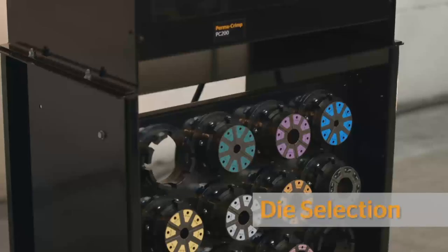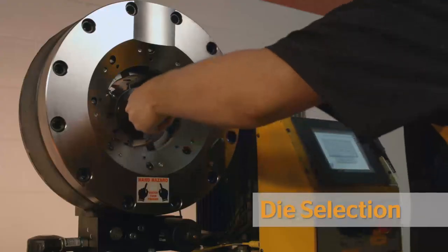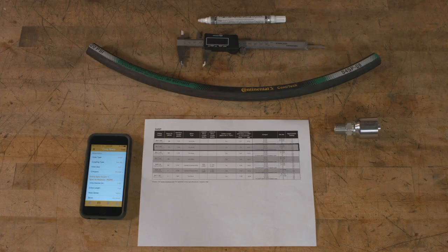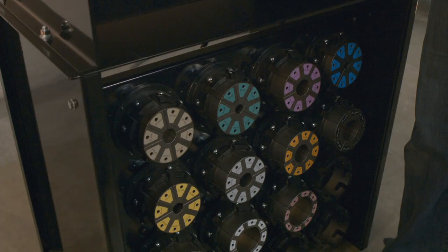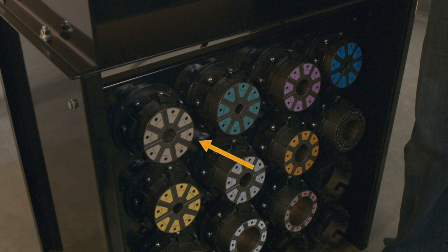Selecting the correct die for use is vital for proper crimper operation. In this example, we are using an S4SP-08 hose, which requires an SG fitting. We will be using Die Set 27 Brown with a setting of 2.4.